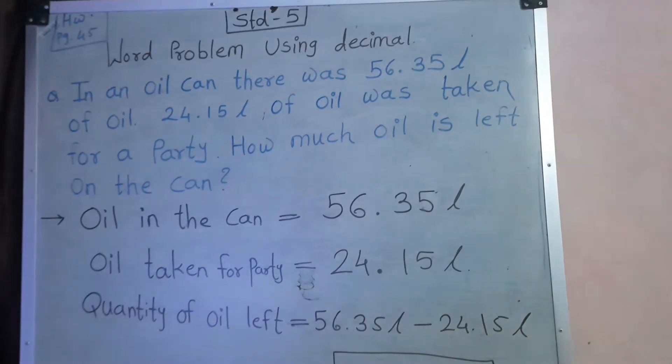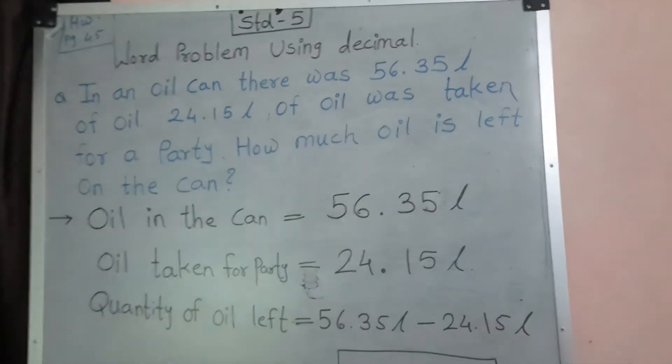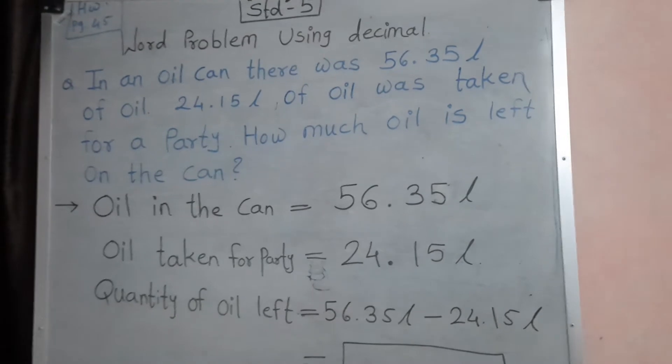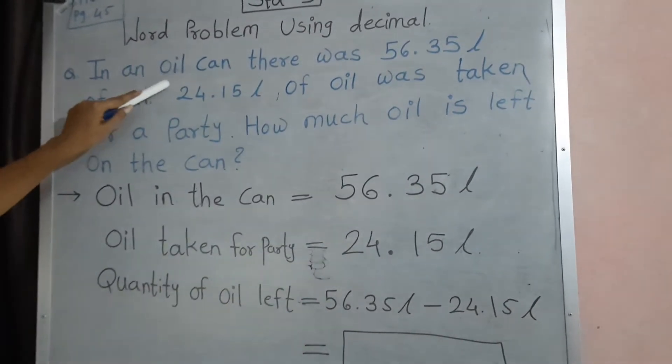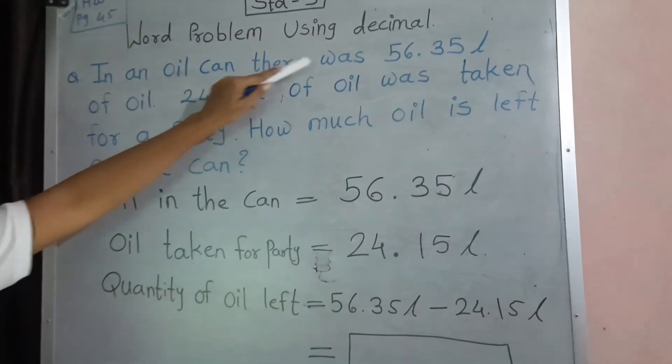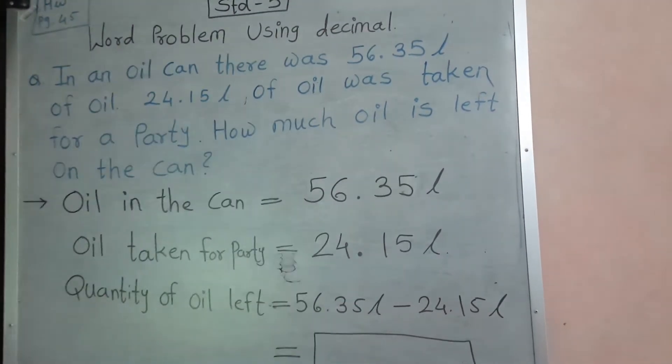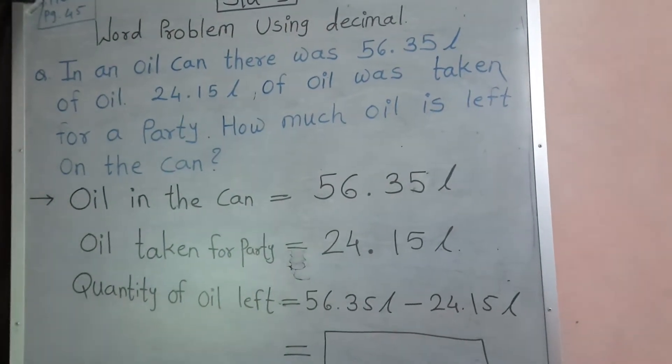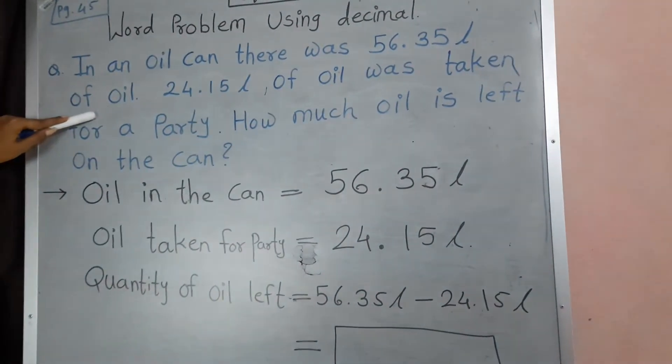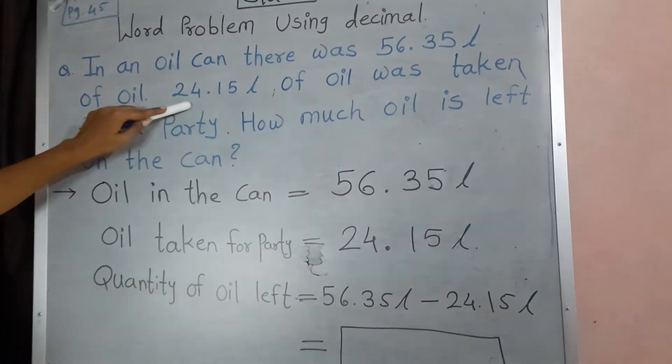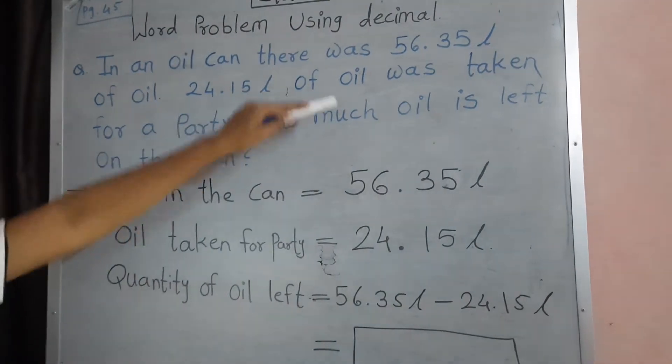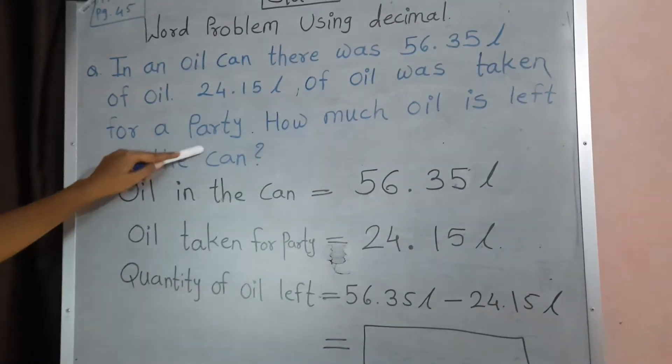Look at the board. Here I write one question that is, in an oil can, there was 56.35 litre of oil and 24.15 litre of oil was taken for a party.